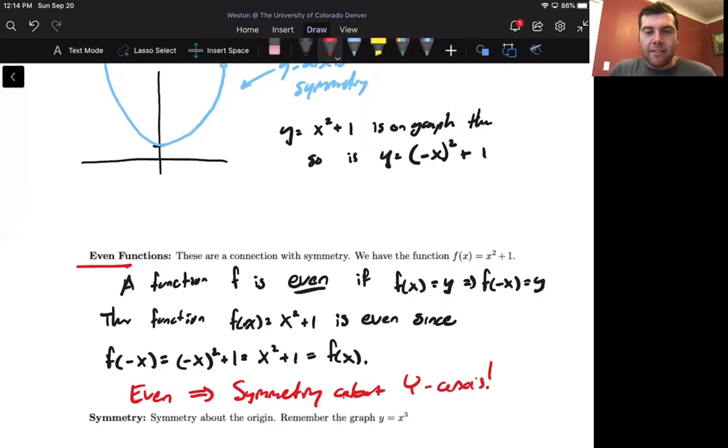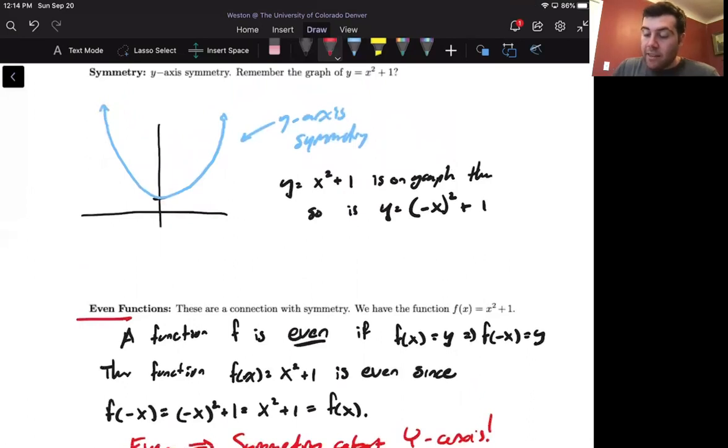That's generally how we think about even functions. If we know what an even function is, then we know what it looks like by just graphing the positive values. When we know the positive half of y equals x squared plus 1, we get the negative half by just reflecting it across the y-axis.